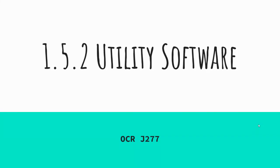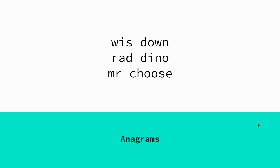Today we're going to talk about utility software as part of overall system software. Quick start: three anagrams. The first two are one word, the final one is technically two. The first word is Windows. The second one, Raddyno, is Android. And MrChoose is Chrome OS. So three examples of operating systems, just as a recap from the previous lesson.